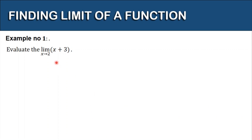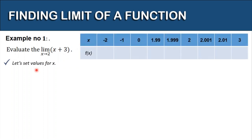Let's have our first example: evaluate the limit of the function x plus 3 as x approaches 2. The first thing we need to do is set values for x. Let's have our table of values. We can see the values of x: negative 2, negative 1, 0, 1.99, 1.999, 2, 2.001, 2.01, and 3. We just need to substitute the values of x to obtain the values of y or f of x.